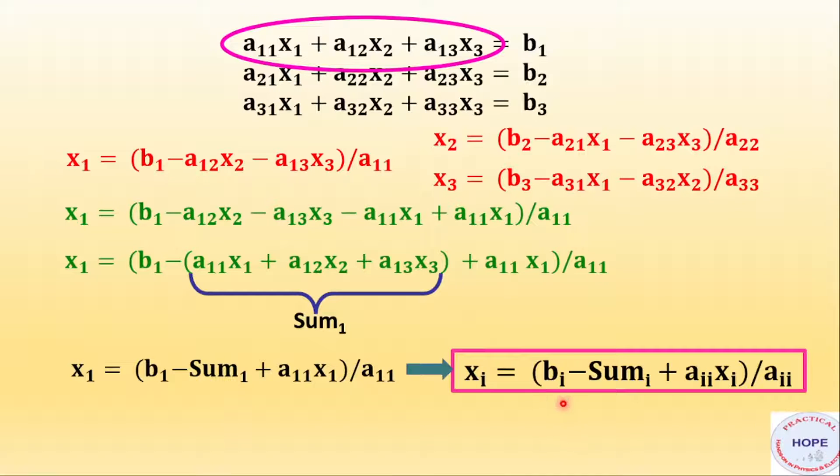Say we want to calculate x2 then x2 equals b2 minus sum2. So that means then we need to evaluate the sum of a21x1 plus a22x2 plus a23x3 plus a22x2 whole divided by a22. Let's implement it in programming.